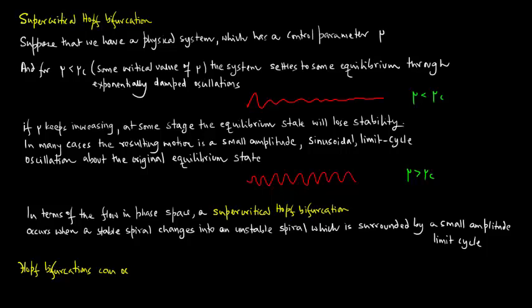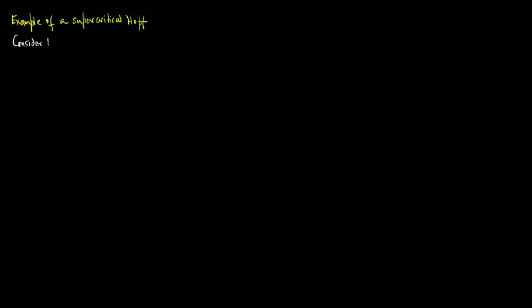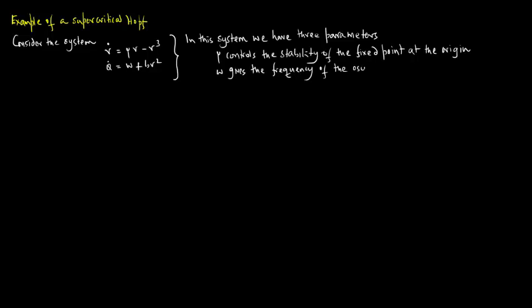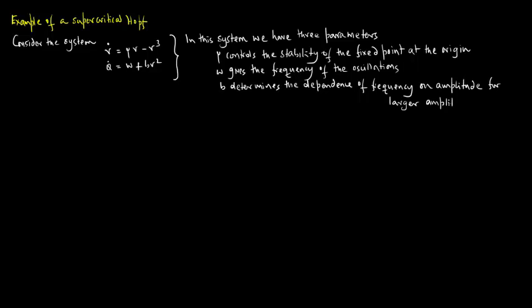The Hopf bifurcation can occur in phase spaces of any dimension n greater than or equal to 2. Consider the example system: r dot equals mu r minus r cubed, and theta dot equals omega plus b r squared. In this system there are three parameters: mu controls the stability of the fixed point at the origin, omega gives the frequency of the oscillations, and b determines the dependence of frequency on amplitude for larger amplitude oscillations.